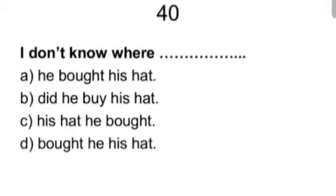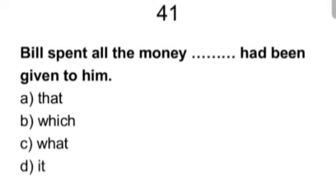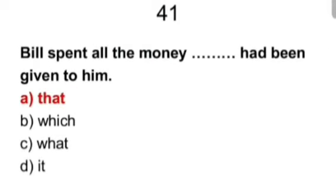Next. I don't know what blank. He bought his hat. Did he buy his hat? His hat he bought. Bought he his hat. Answer is he bought his hat. First option is simplicity. Don't think too deep. That one that comes in your mind first, that one you take. If it is wrong, then you go for the reason. Clear. Don't go for critical answer first. First you answer that one you know, you are habituated with. Then check whether your knowledge is correct or wrong. Don't guess anything. Bill spent all money, all the money blank had been given to him. That, which, what, it. Answer is that.